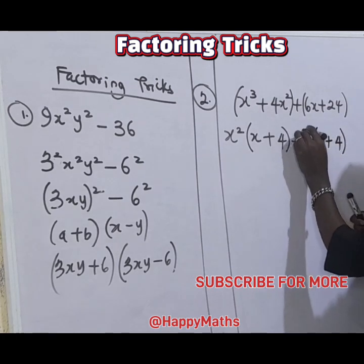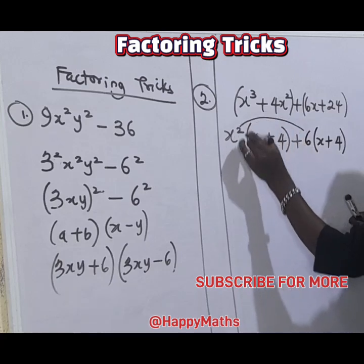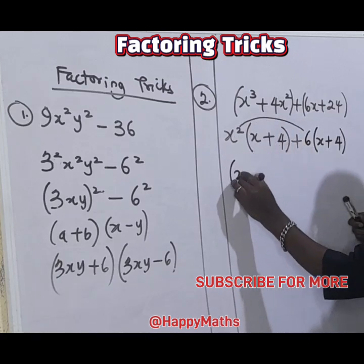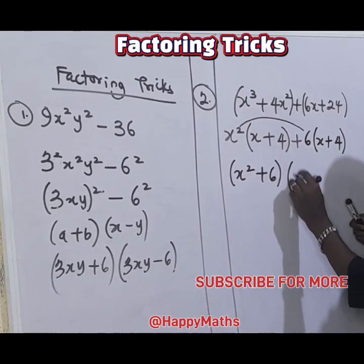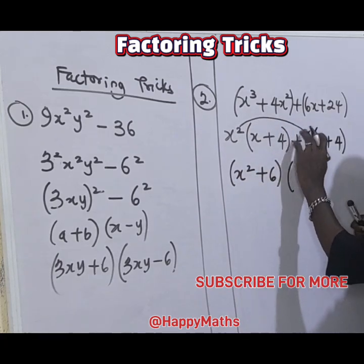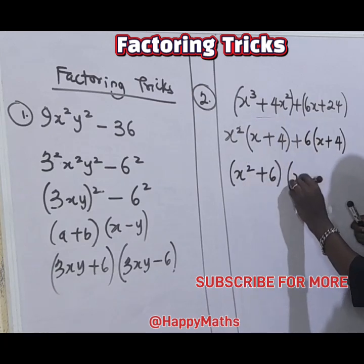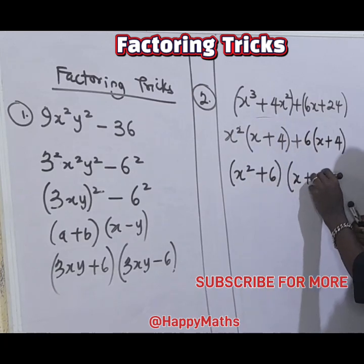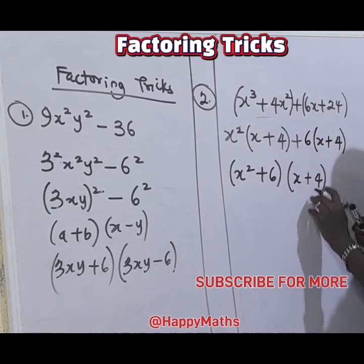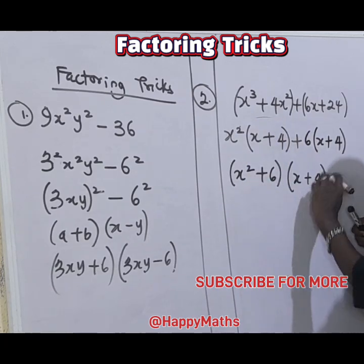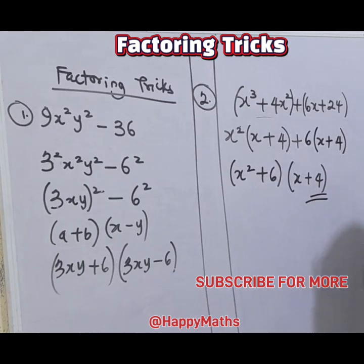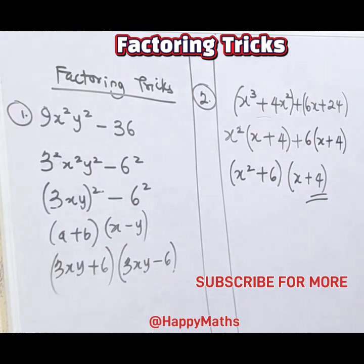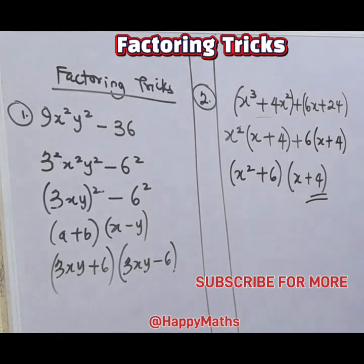Now let's combine this. So this will give us s squared plus 6, into the first and second bracket which is common. We take out the common factor. Either order is correct — that is the final answer. Subscribe to our channel and follow us for more content. Bye.